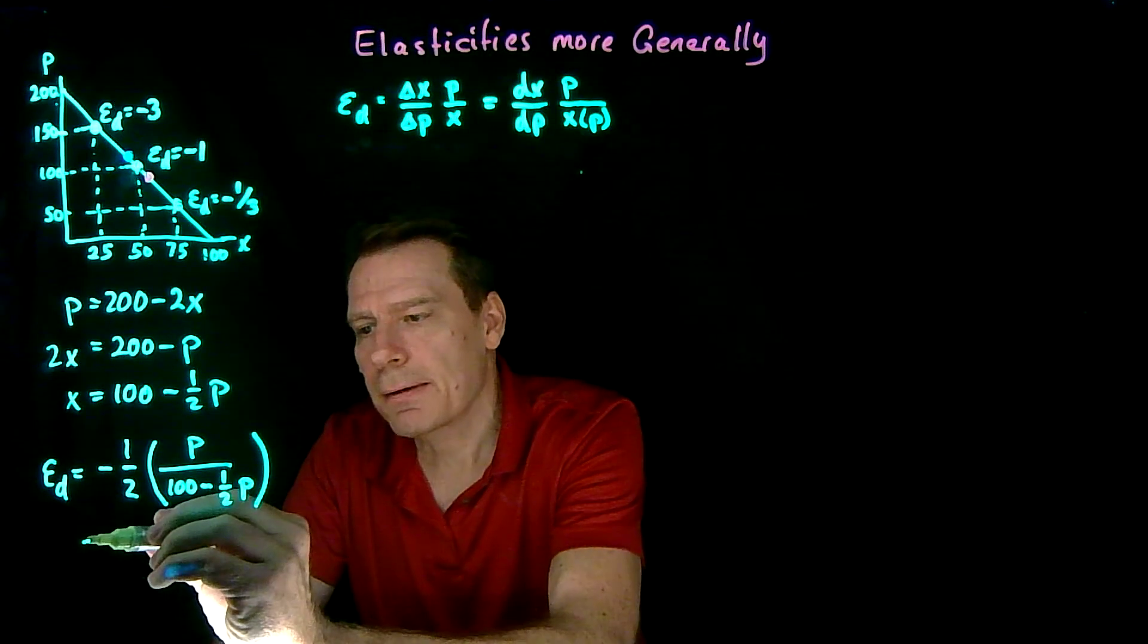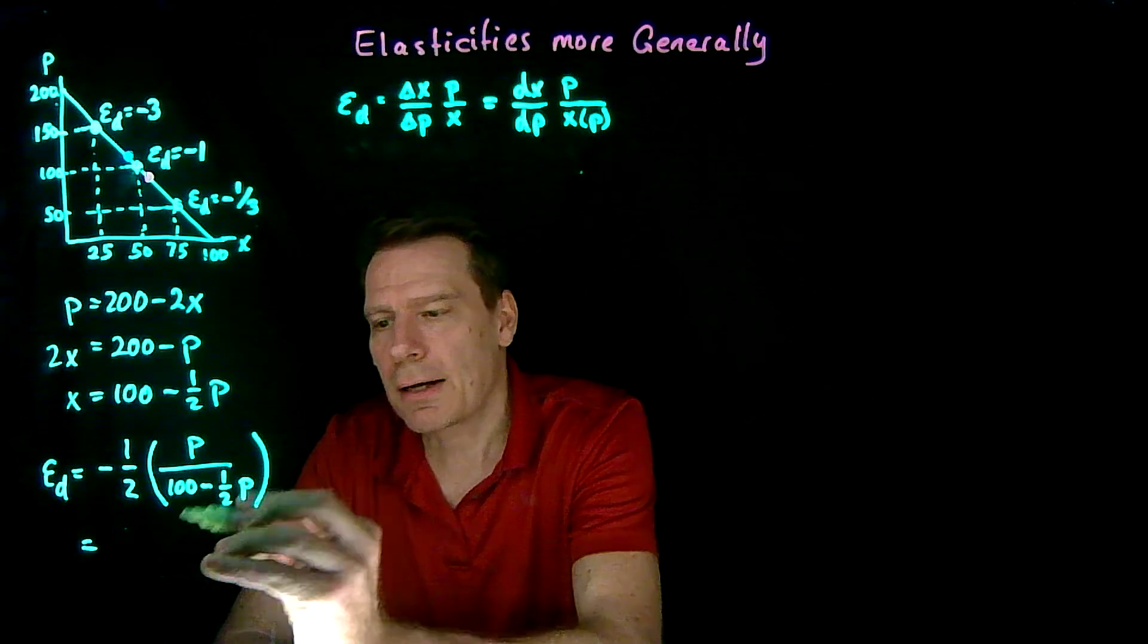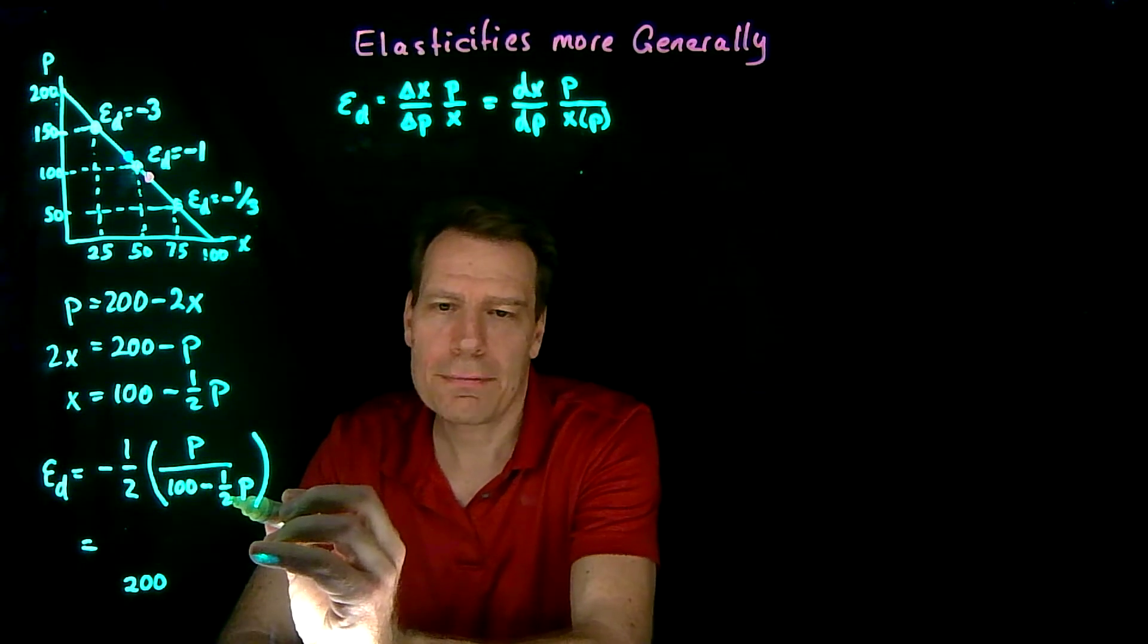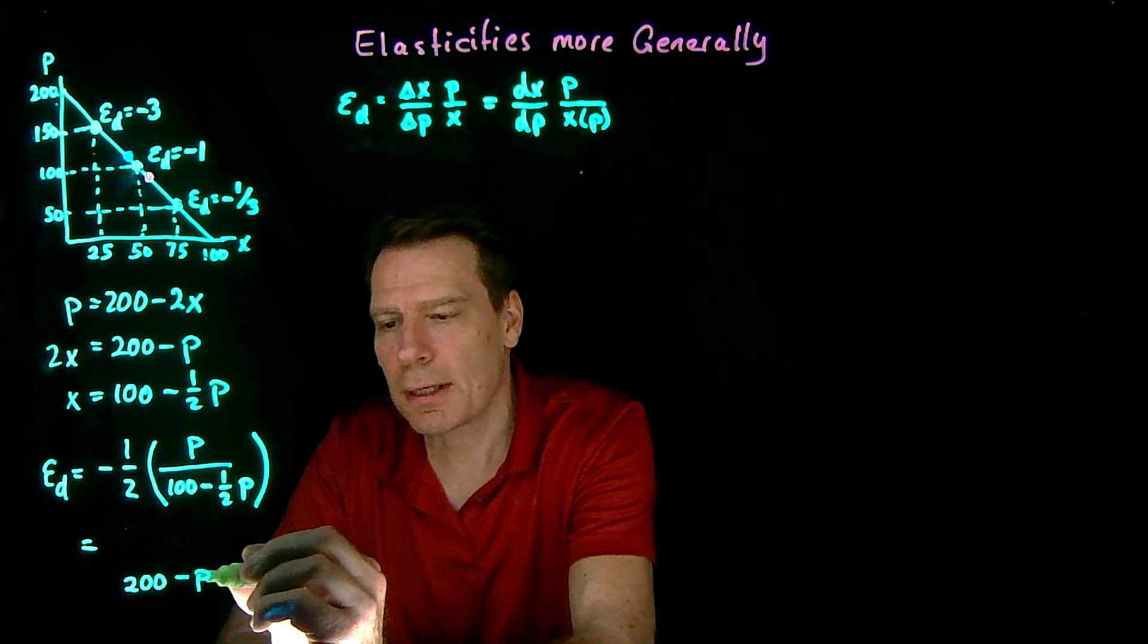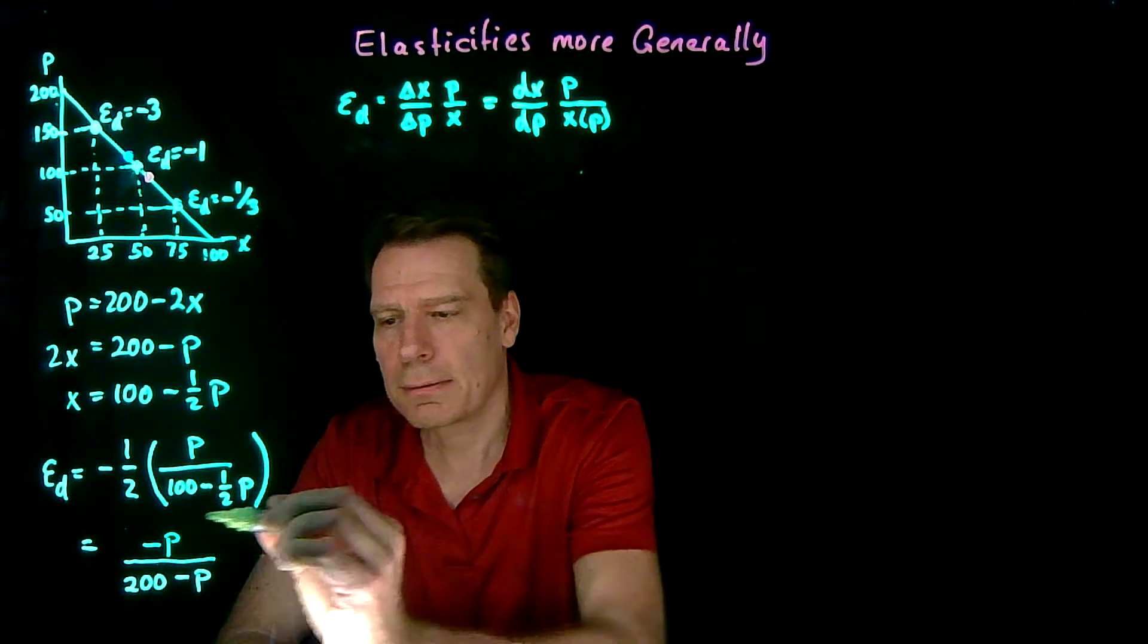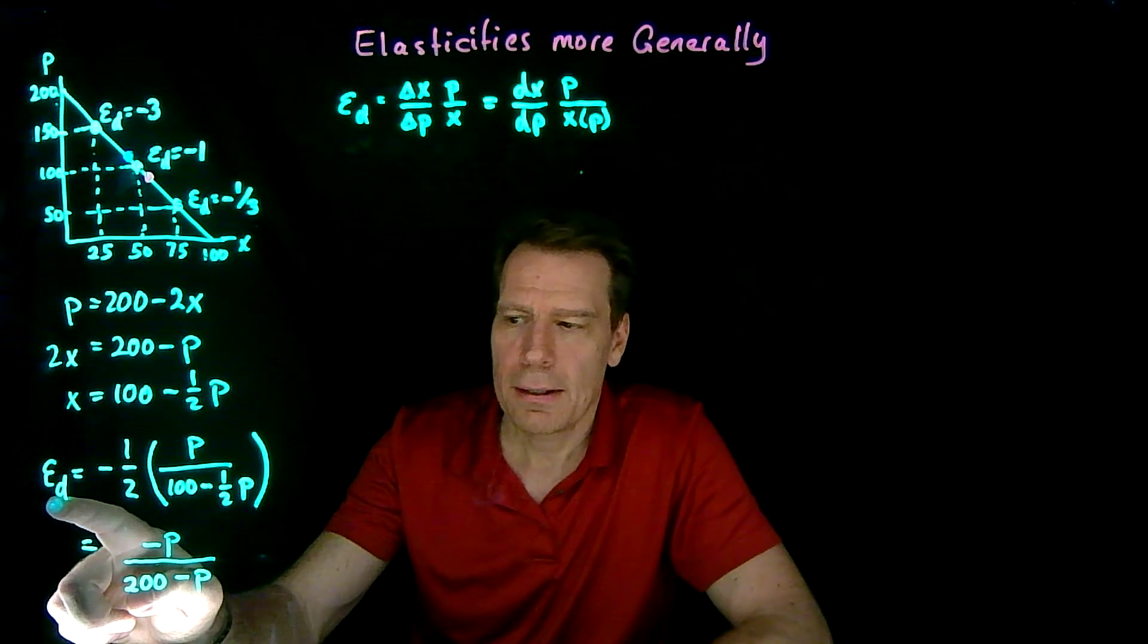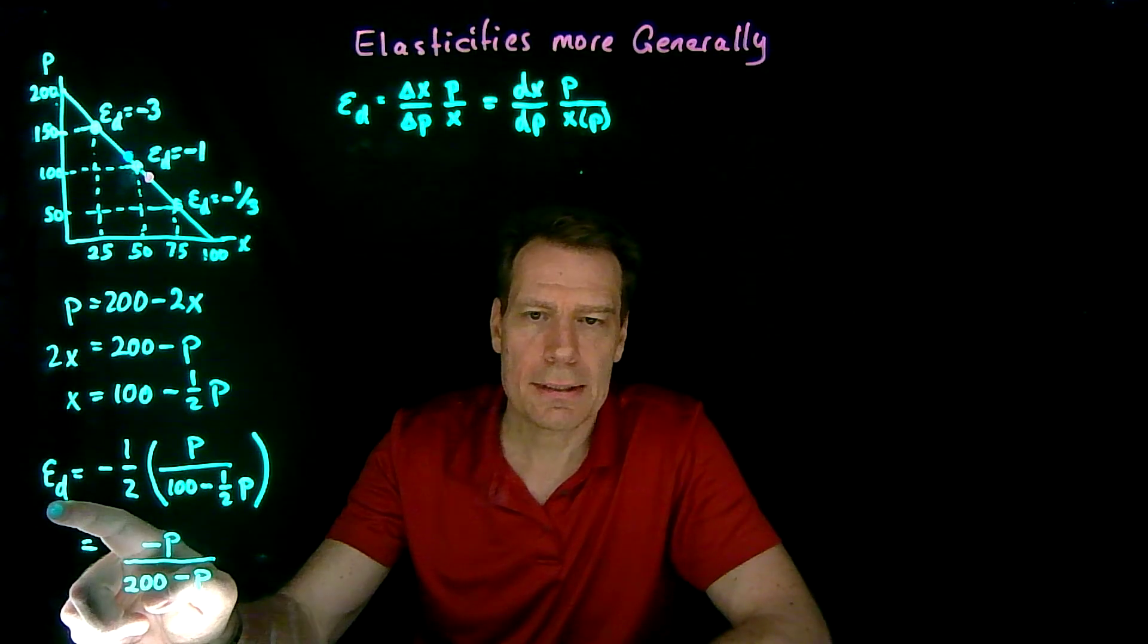Now we can simplify. So 2 times 100 will give us 200. That 1 half and that 1 half, they're going to cancel. So we'll just have a minus p on the bottom. And on the top, we'll have this p and the negative sign minus p. So now we have an expression for the elasticity of demand that tells us, for any price, what that elasticity is going to be.